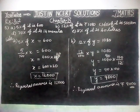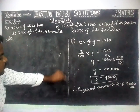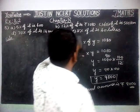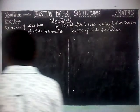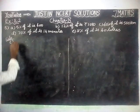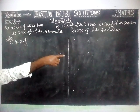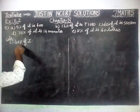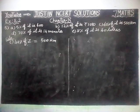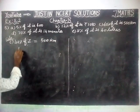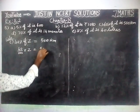Now we are going to solve part C. 40% of it is 500 kilometers. We are going to take Z. So 40% of Z is equal to 500 kilometers. That is, 40 divided by 100 into Z is equal to 500.